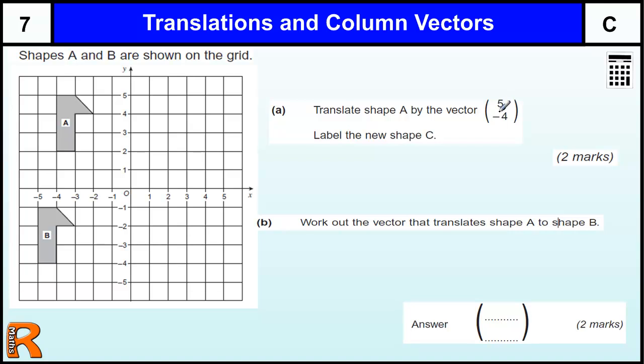Your translation is a shape using a vector 5 minus 4. If you practice this, this is fairly straightforward.